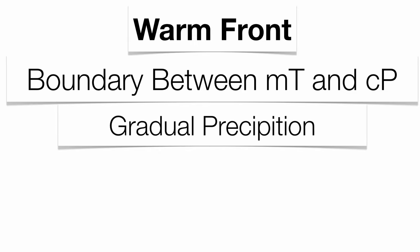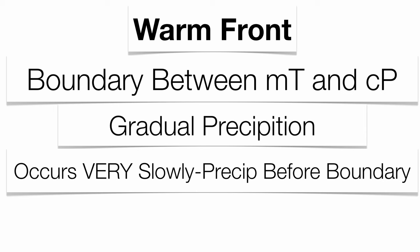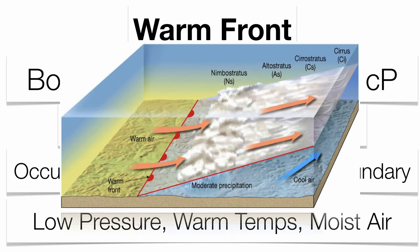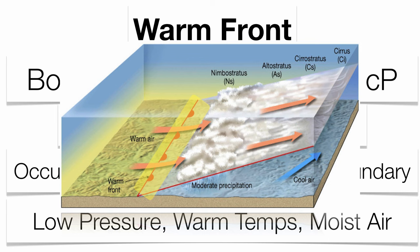Warm fronts are the exact opposite — this is where a warm air mass is trying to overtake a cold air mass. You tend to get gradual precipitation that usually occurs over a couple of days. So if you're expecting a warm front on Wednesday, you'll likely get precipitation starting Monday night into Tuesday. The warm air lifting is not as violent, producing very gradual precipitation. Once the warm air mass passes through, you get lower pressure, a little warmer temperatures, and more moist air. The precipitation actually occurs before the frontal boundary comes through.